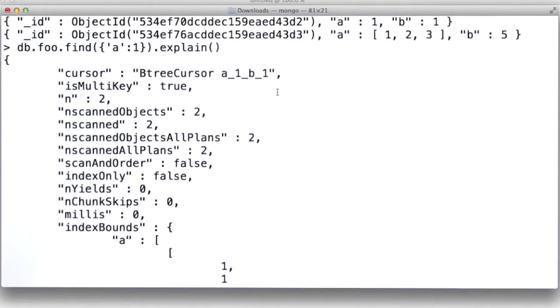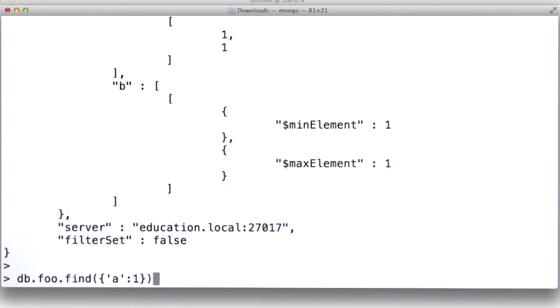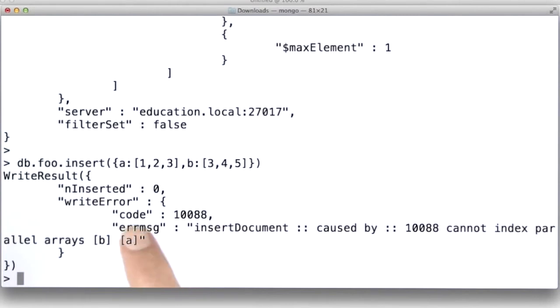And as I said before, if you try to insert something into the collection where both A and B are arrays for this compound index, that is going to fail. Let's watch that fail. And it says here, I can't insert that document with A having a value of 1, 2, 3 and B having a value of 3, 4, 5. It says because I can't index parallel arrays B and A. So you can have a compound index on A and B, but if both of those values for a document are both arrays, then it will fail.